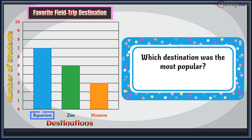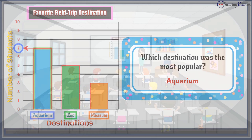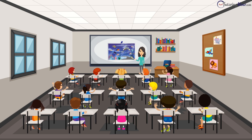Which destination was the most popular? Comparing the heights of the three bars, we can see the aquarium has the tallest bar. So Ms. Jenkins declared that she would take her class to the aquarium.